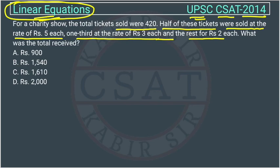So how will we do it? The total is 420 tickets. Out of it, if we see half, half of these tickets were sold at the rate of 5 rupees.